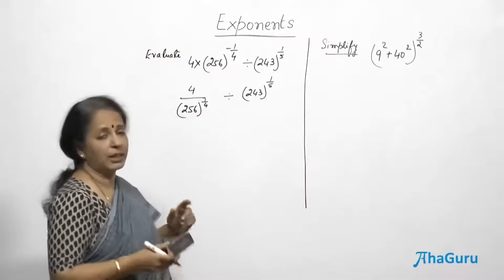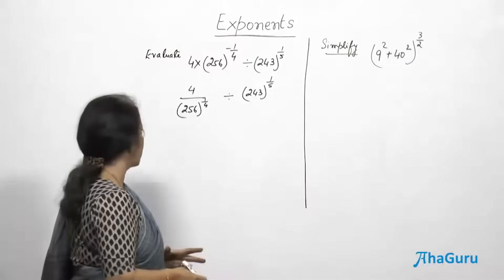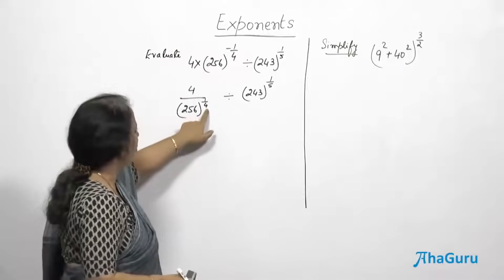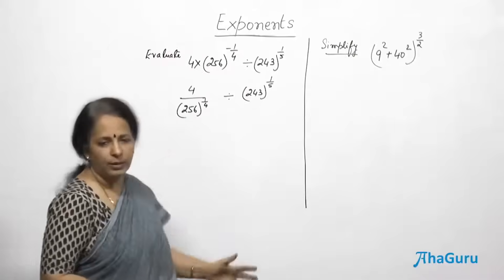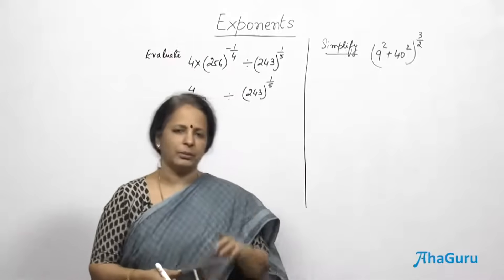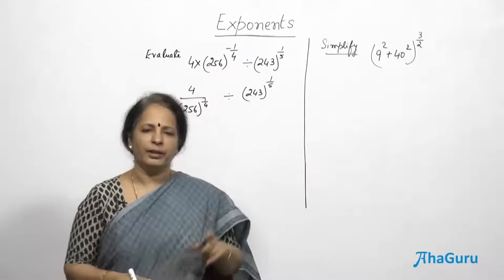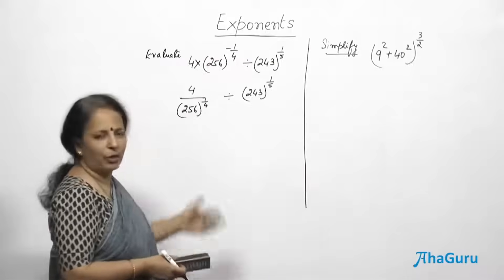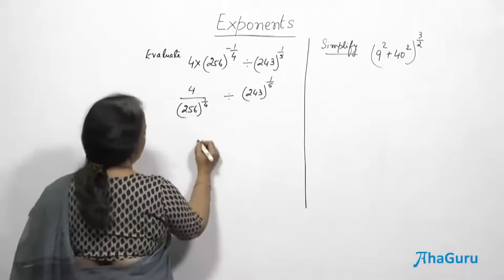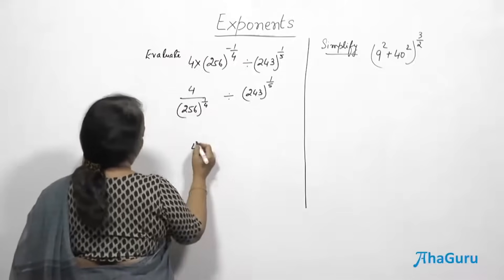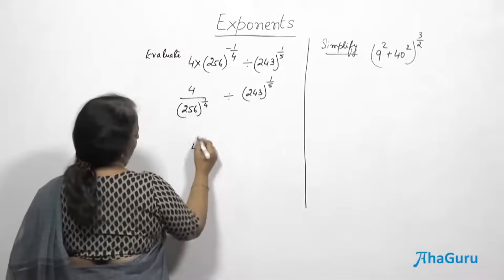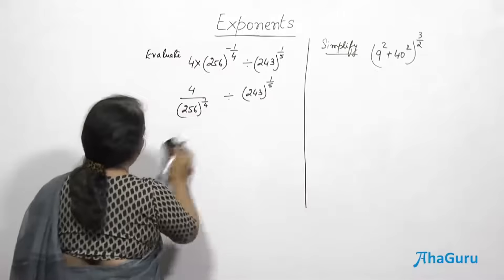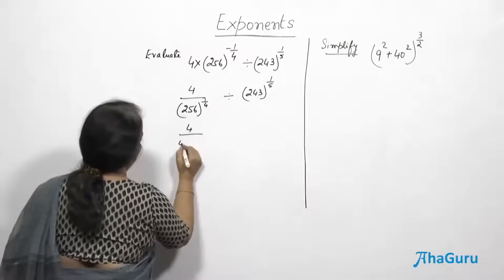We have to evaluate, meaning each and every term we have to make as simple as possible. The 4 remains as it is — no need to worry there. Let us find the fourth root of 256. We use the prime factors method and find the group of 4 — which number appears 4 times. The numerator is 4, the denominator is the fourth root of 256.